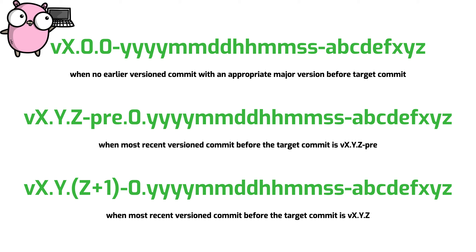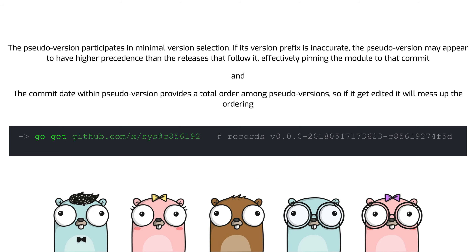As a best practice, a pseudo version string should never be typed by hand. The go command will accept the plain commit hash and translate it into a pseudo version automatically. This method helps to compare revisions based on the generated timestamp. For example, a go get command might use just the commit hash for the module query, as you can see here.